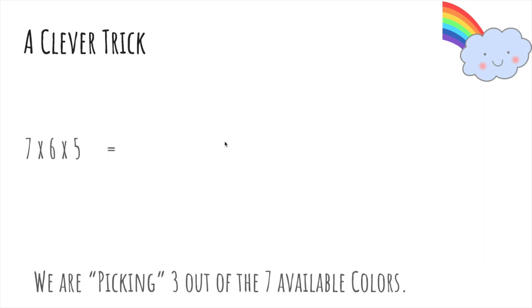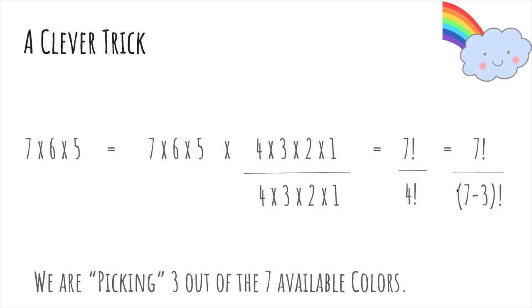So now let's try to write this differently. So 7 times 6 times 5, I'm going to multiply the top and the bottom by the same thing. This is 1, so I can do this. And notice the top just becomes 7 factorial, and the bottom is just 4 factorial. Or 7 factorial over 7 minus 3 factorial. This is where picking 3 out of 7 available colors. That means order matters, and so the answer will be like this.